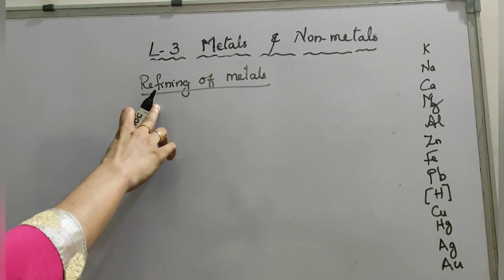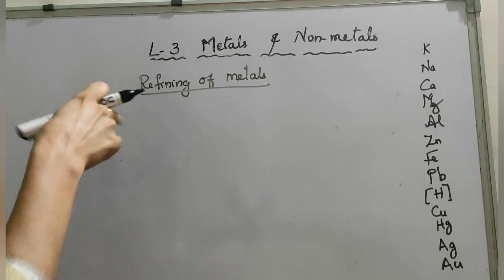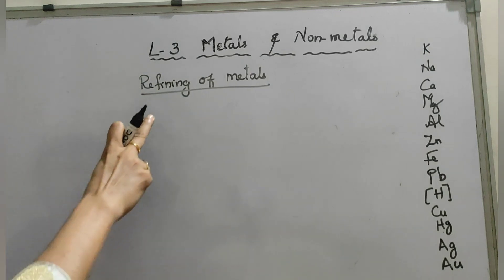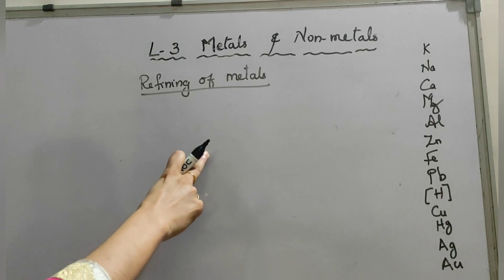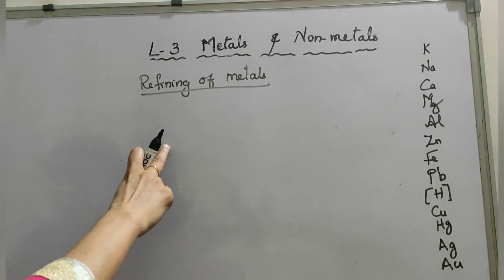So let's watch this video. The various reduction processes described above are not very pure. They contain impurities which must be removed to obtain pure metals. The most widely used method for refining pure metal is electrolytic refining.